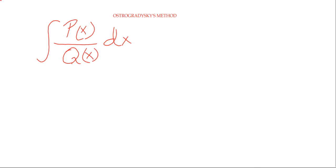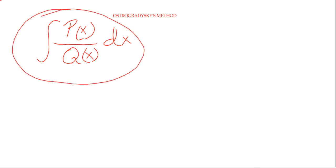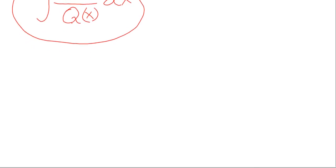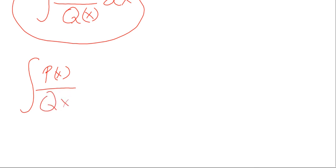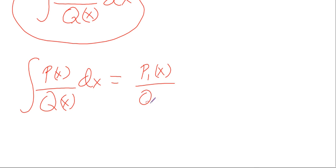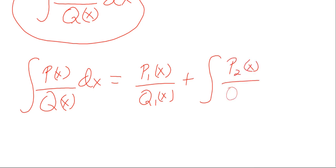The idea here is to obtain some other polynomials that we shall call P1, P2, Q1, and Q2, using the Ostrogradsky's method. The method can be expressed as: the integral of P(x)/Q(x) dx equals P1(x)/Q1(x) plus the integral of P2(x)/Q2(x) dx.